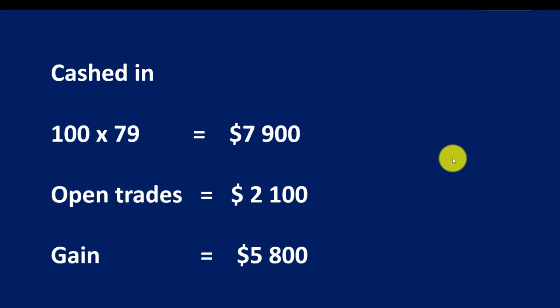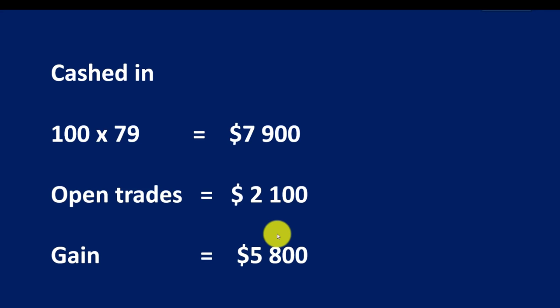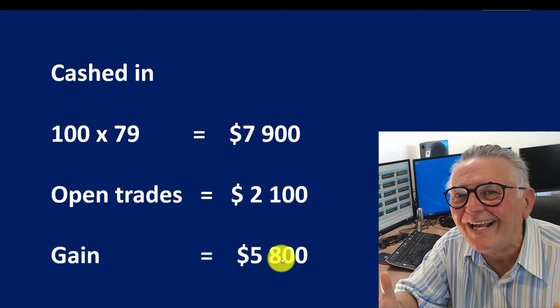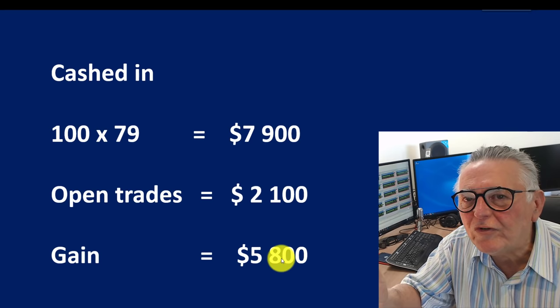Let's look at the results. On our cashed-in deals, 100 pips times 79 cash-ins equals 7,900. On open trades, the balance works out to minus 2,100. That means we've made a net gain of 5,800 pips — quite a big gain in six weeks of trading, about a thousand pips a week. That is exceptional, and that's the kind of result that comes out of grid trading. And we did that on autopilot.